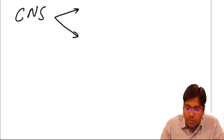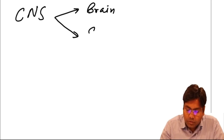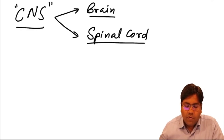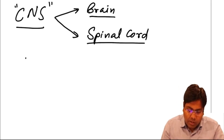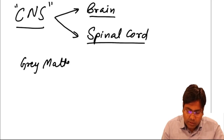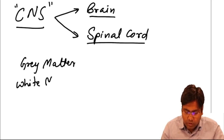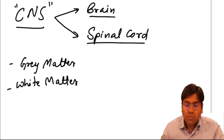The central nervous system is the brain and spinal cord. Brain and spinal cord together are the parts of the central nervous system. When we talk about the central nervous system, there is a gray matter as well as a white matter — gray matter and white matter.